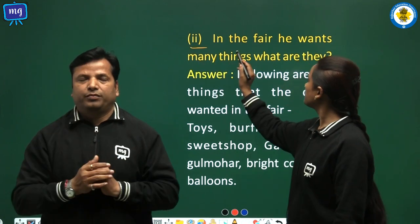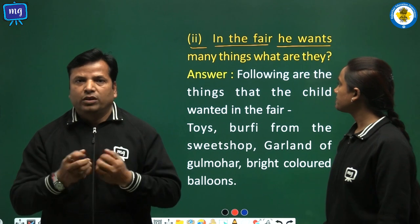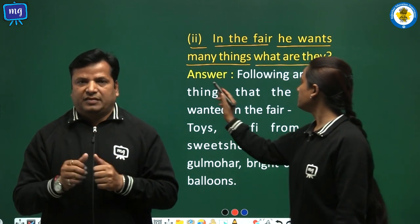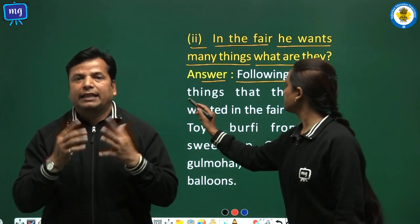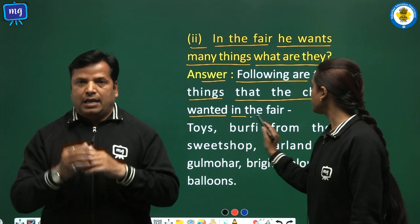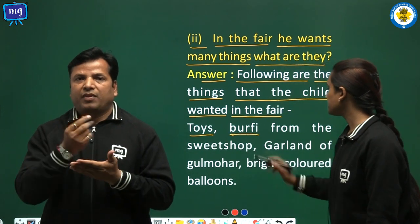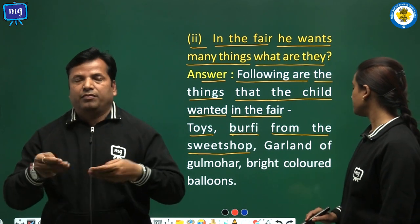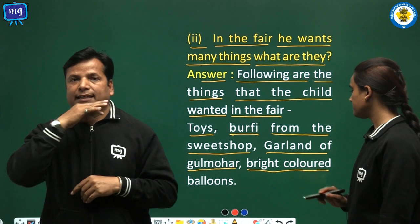Question 2: In the fair he wants many things — what are they? Answer: The following are the things that the child wanted in the fair: toys, burfi from the sweet shop, a garland of gulmohar, and bright coloured balloons.